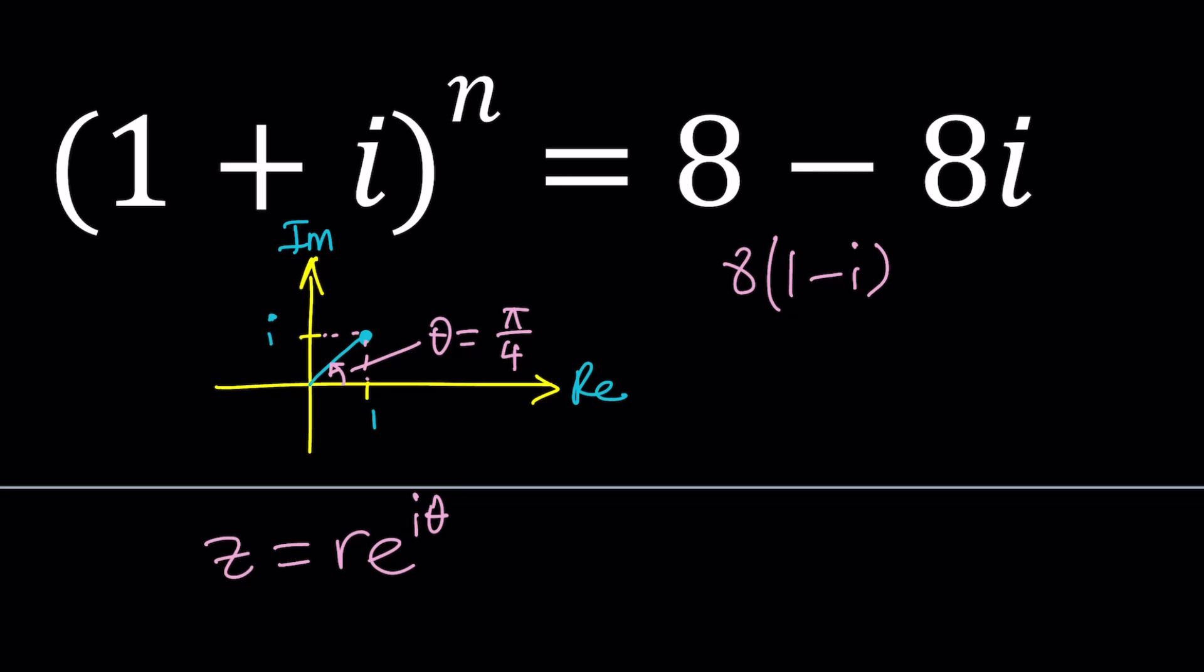We can also express them as vectors. But 1-i is just going to be here instead of in the first quadrant—it's just going to be in the third quadrant.